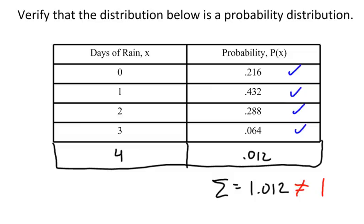That's how you can verify if you have done your work correctly, and whether a distribution you're looking at is a probability distribution: are each of the probabilities between 0 and 1, and does the sum of all of them equal 1?